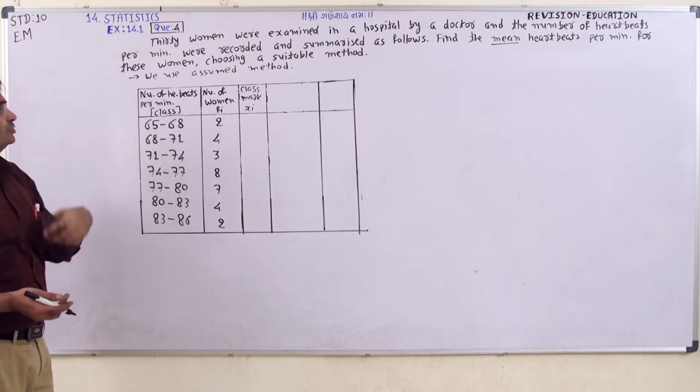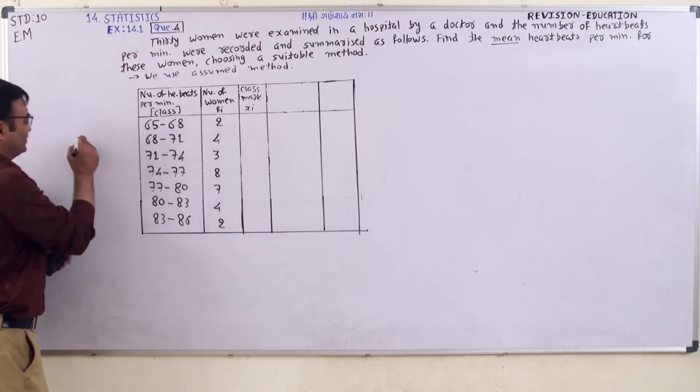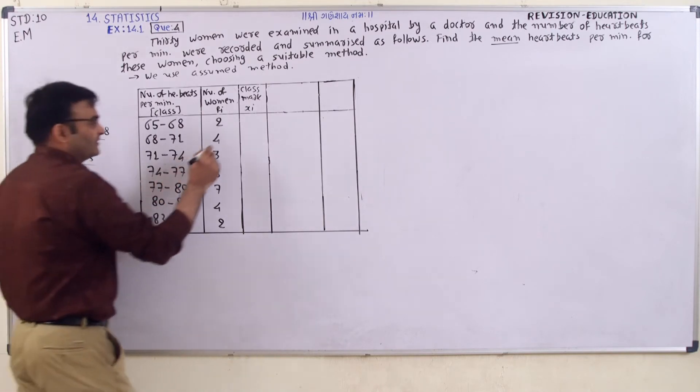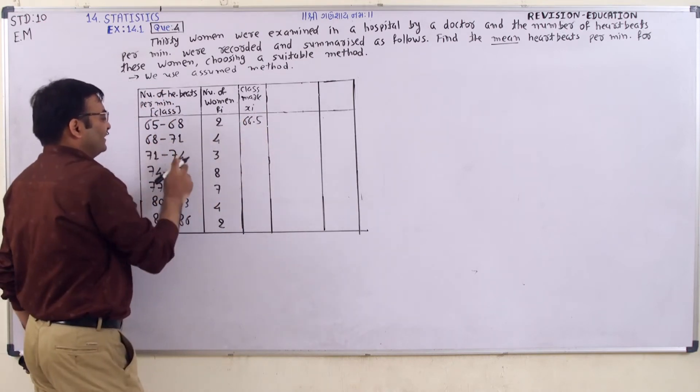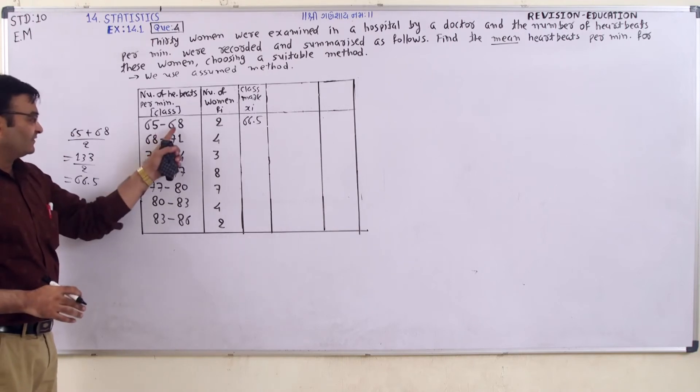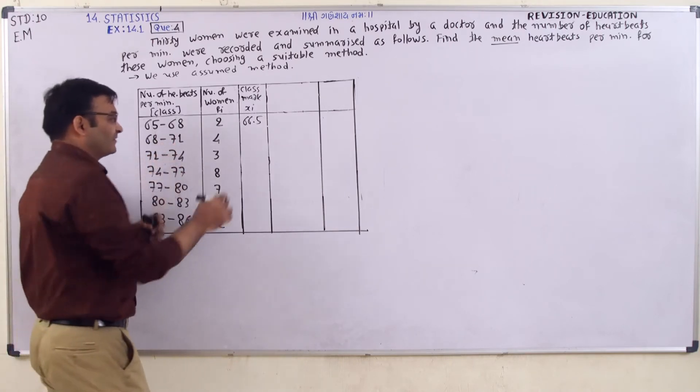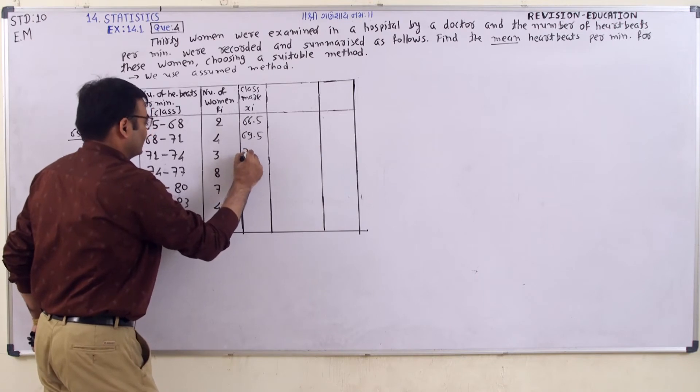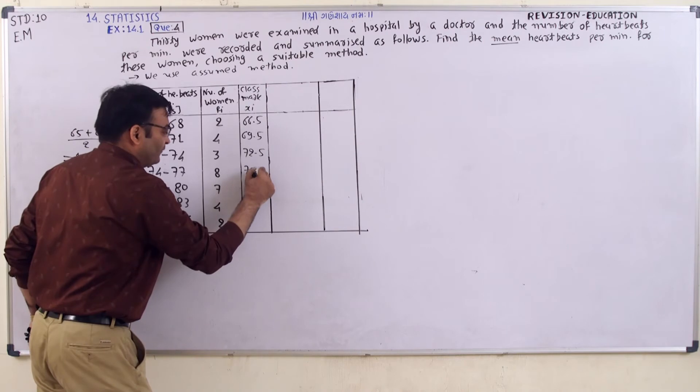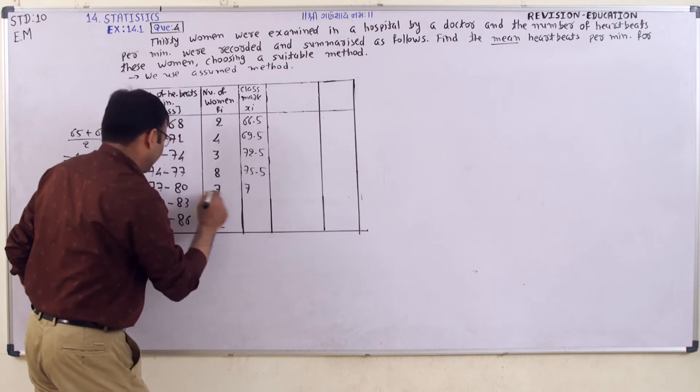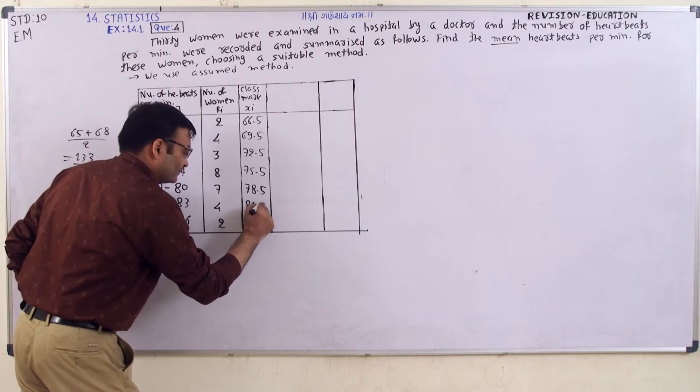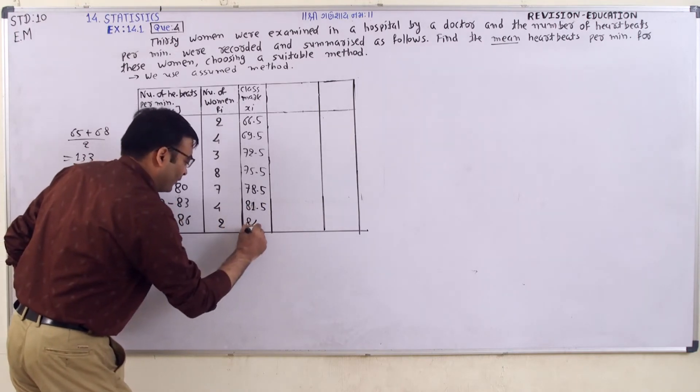So 65 plus 68 divided by 2. What do we find? 66.5. Then 69.5, 72.5, 75.5. Here 78.5, here 81.5, and here 84.5.